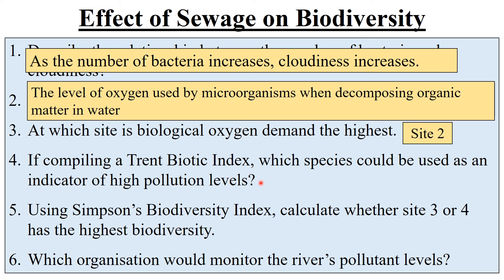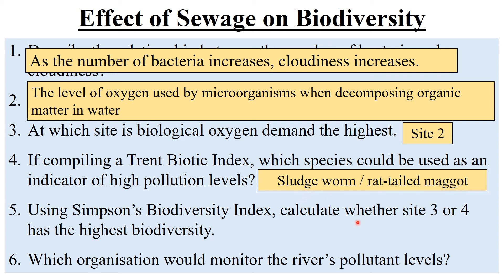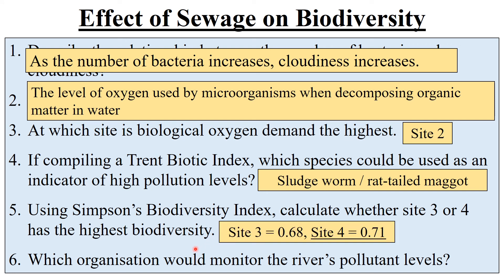Number four: if compiling a Trent biotic index, which species could be used as an indicator of high pollution levels? You're picking out the species at site two — so sludge worm or rat-tailed maggot would be the indicators. Number five requires you to do a table. Using Simpson's biodiversity index, calculate whether site three or four has the highest biodiversity. Site three would be 0.68 and site four is 0.71 — meaning site four has the highest biodiversity.